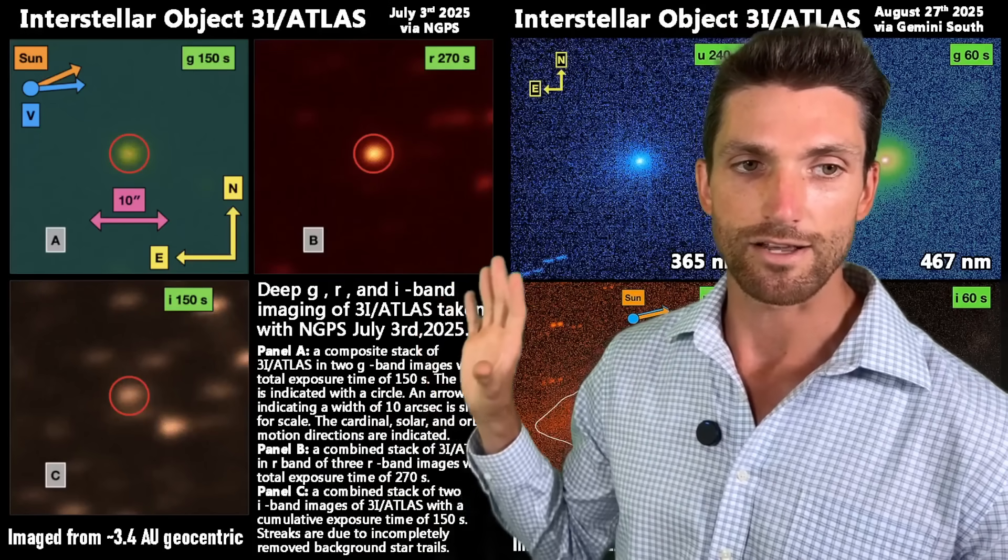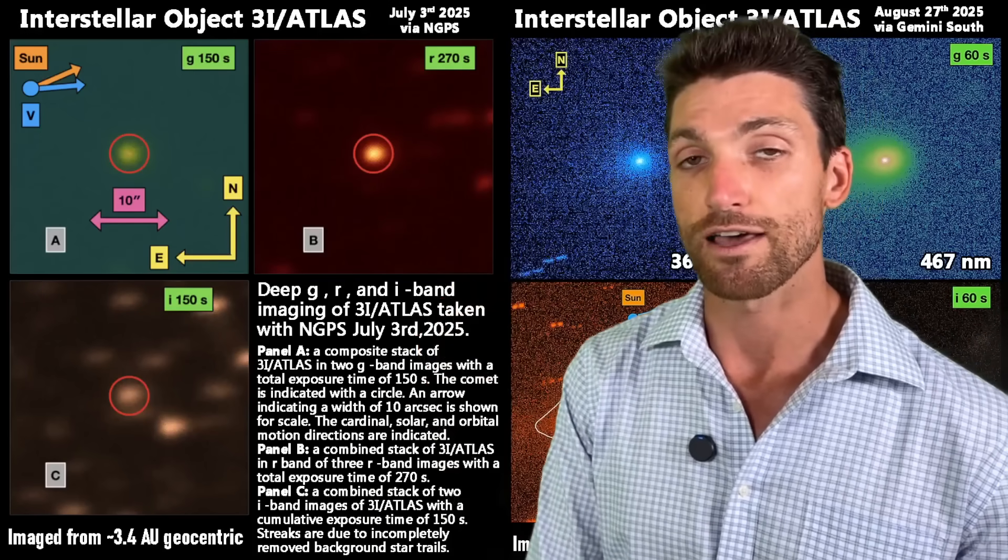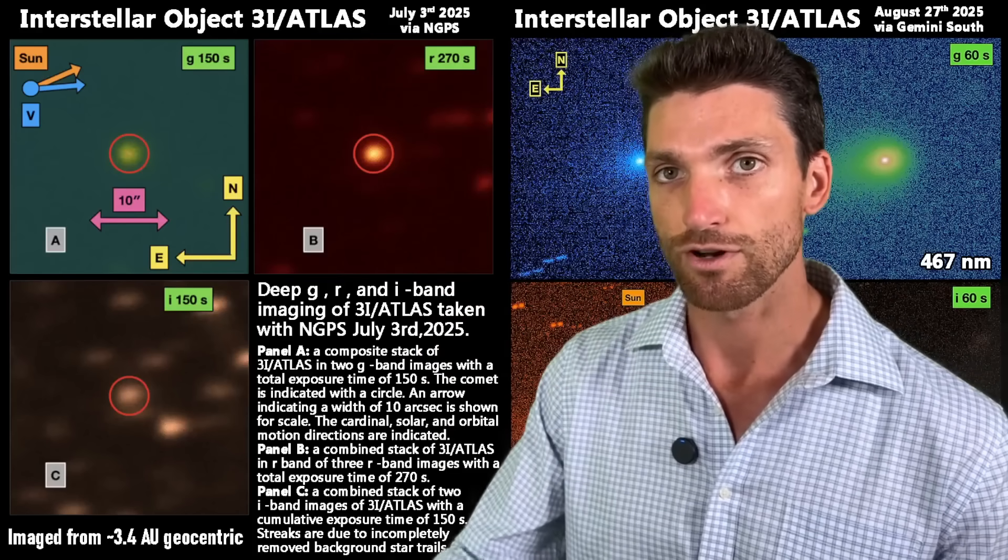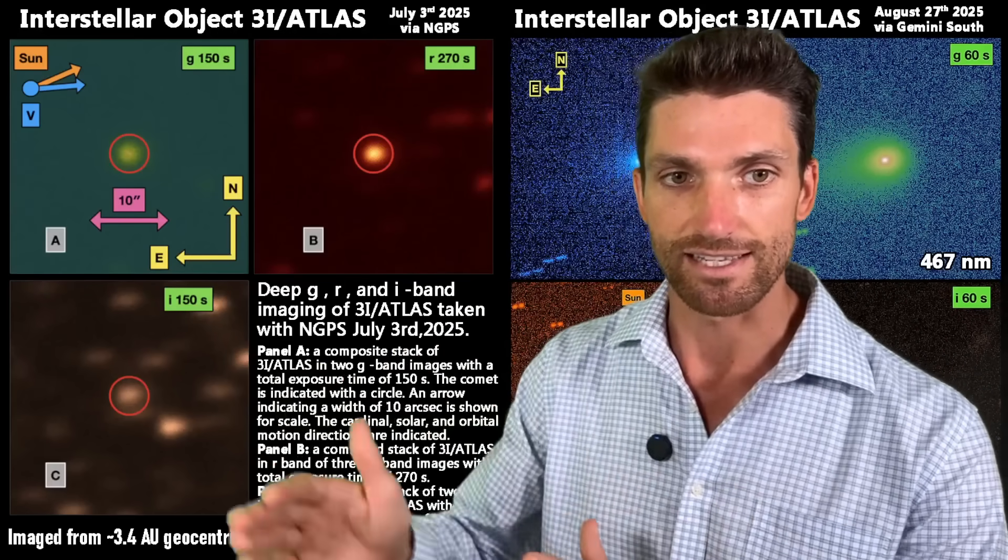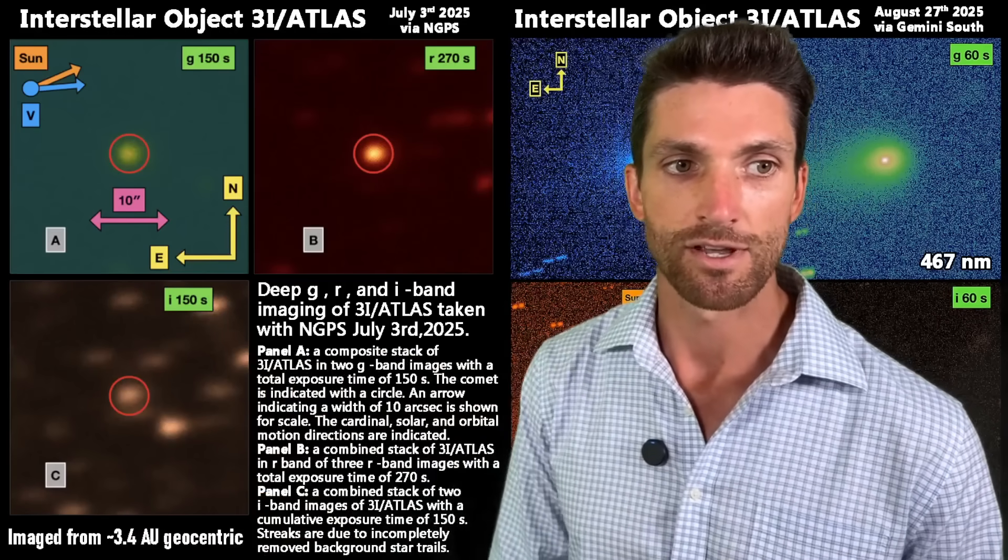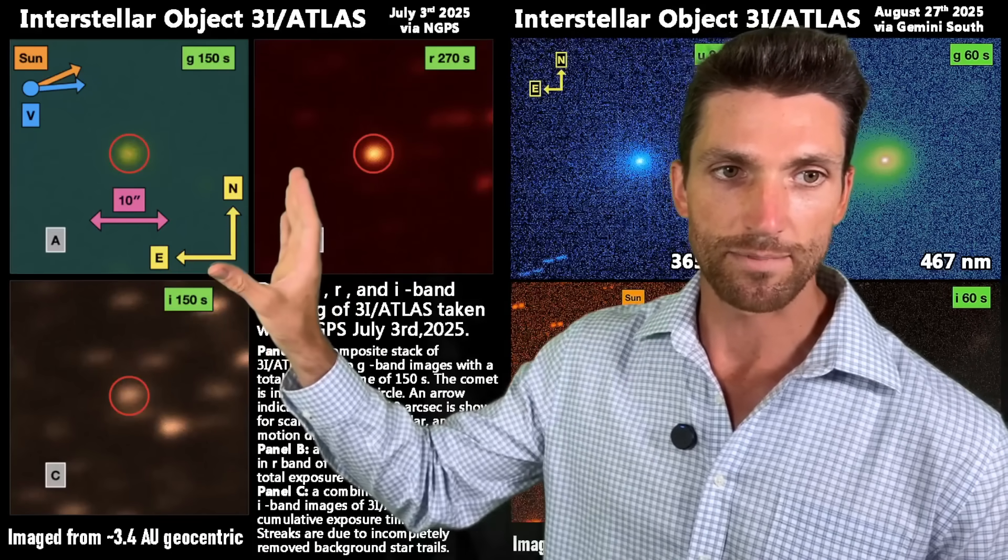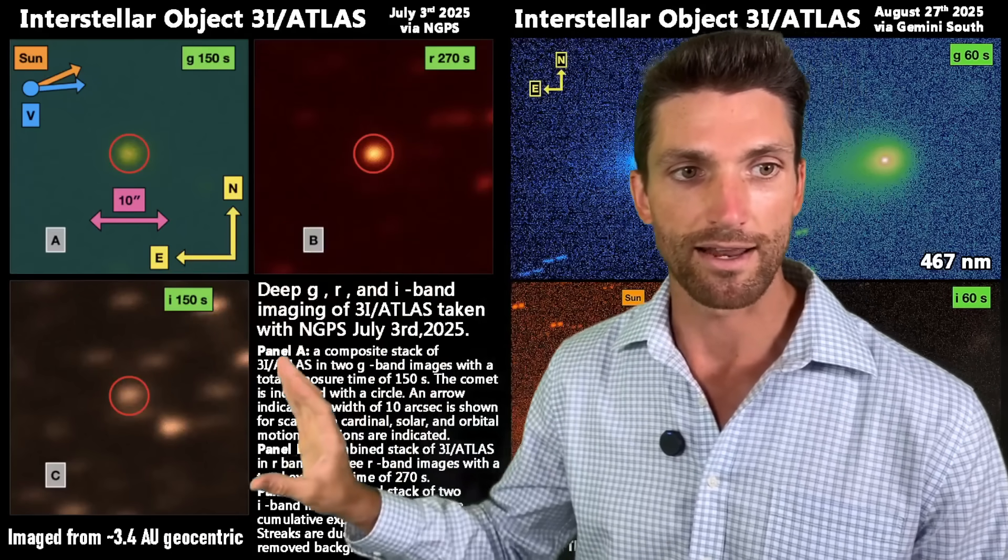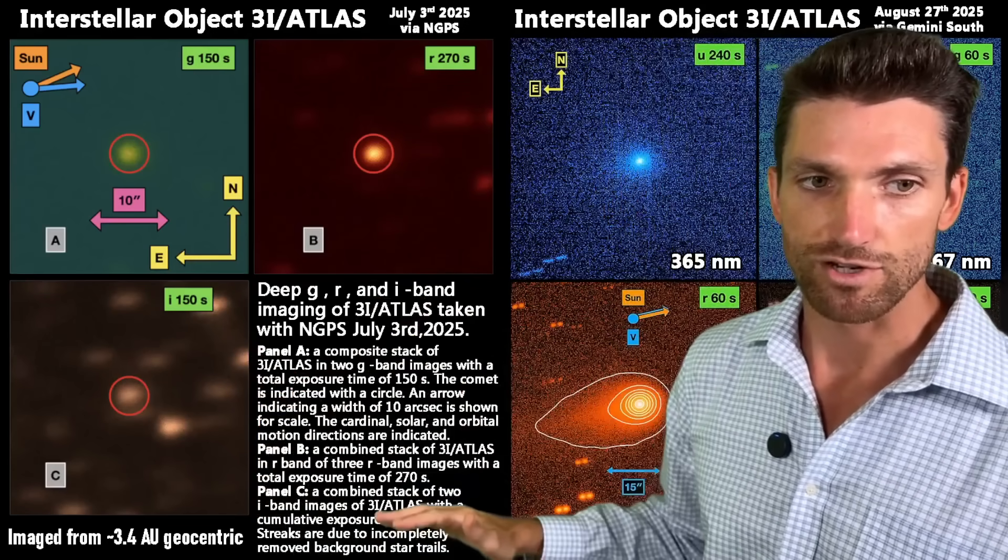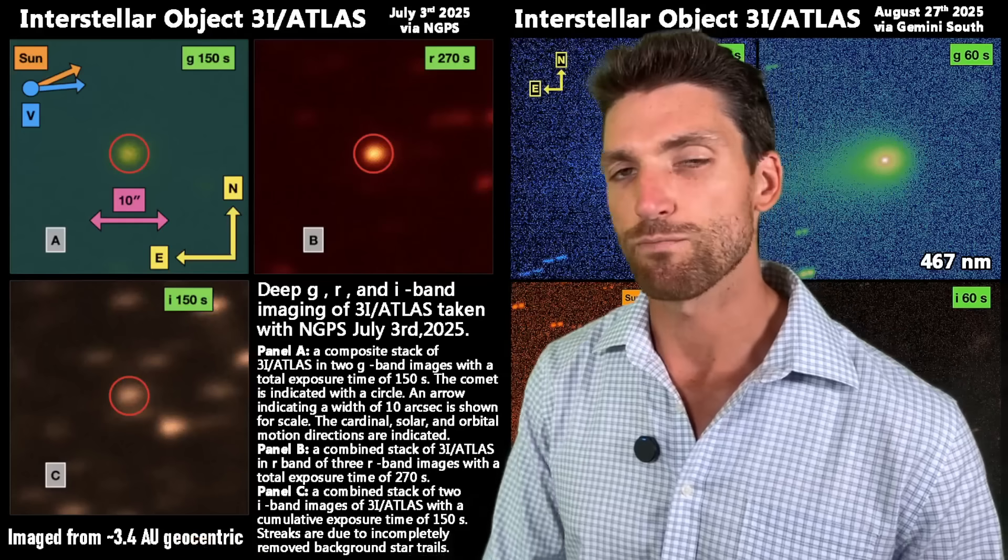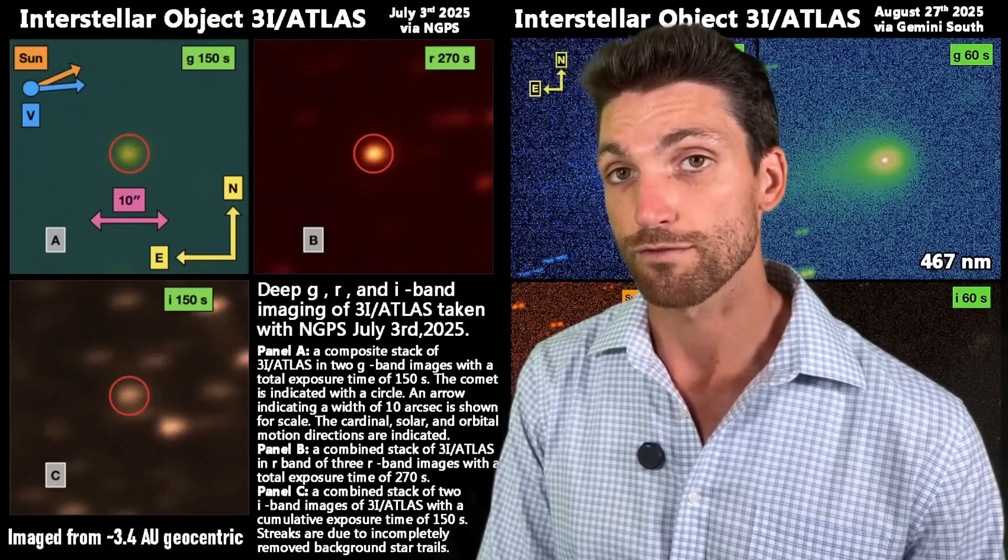Here though is our optical imagery from July 3rd, just a couple of days after it was first picked up by the Atlas Observatory. That's why you have the Atlas in the name of 3I Atlas. And this is our green optical band, our red optical band, our infrared optical band, and then some information here, image at about 3.4 astronomical units from the Earth.